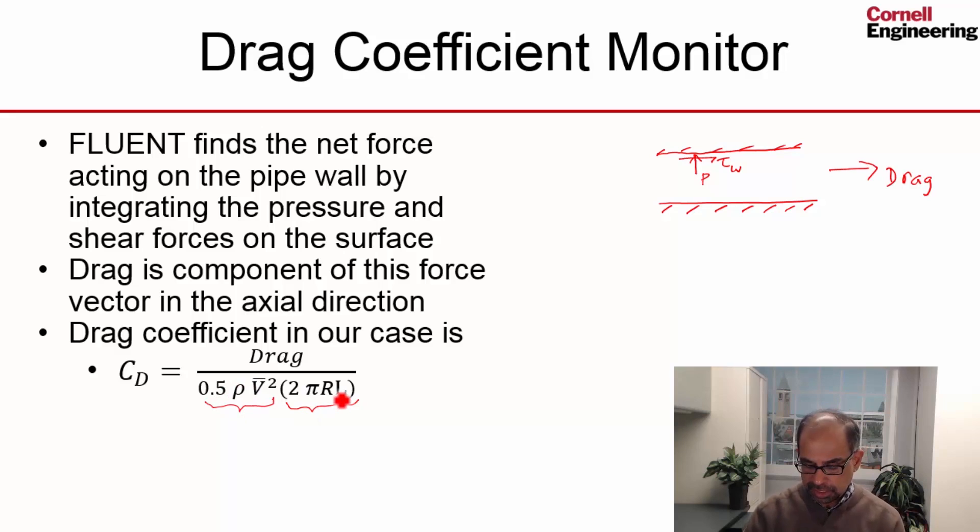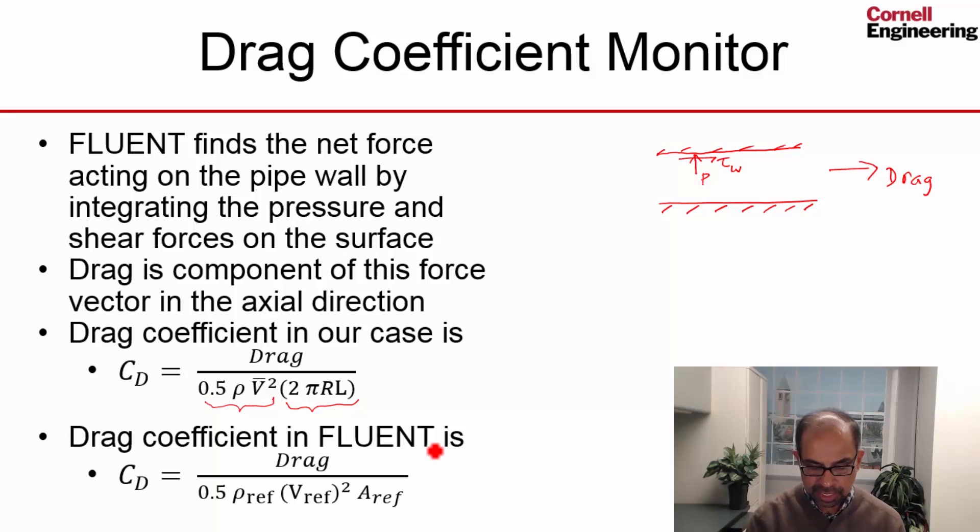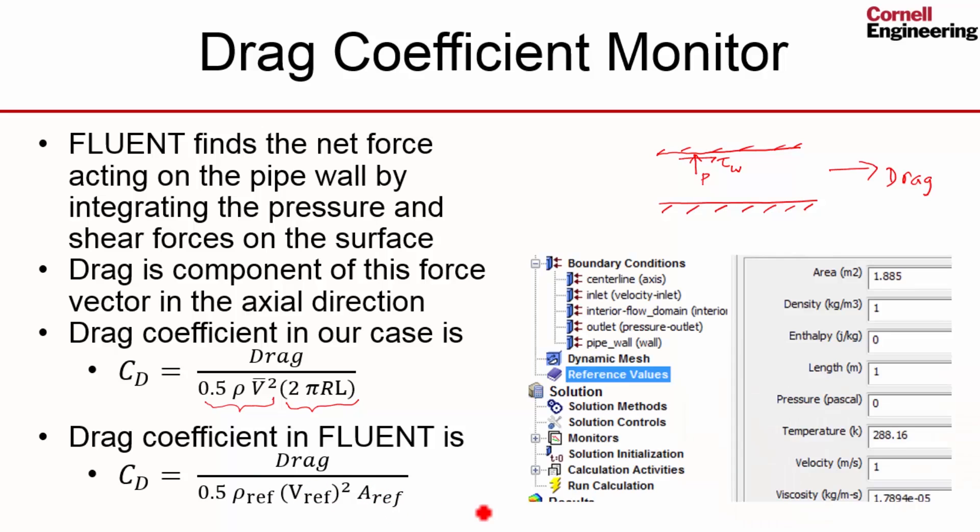And these entities in the denominator are set in Fluent as follows. So the drag coefficient in Fluent is defined as a drag divided by this denominator over here. So it's looking for reference value. So it will use a reference value of rho over here, reference value of velocity and reference value of area. And these reference values are set in the reference values panel.